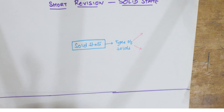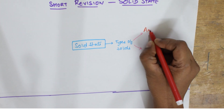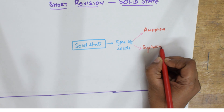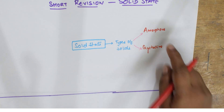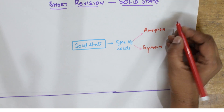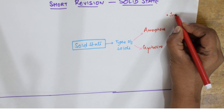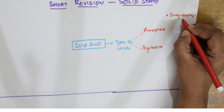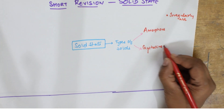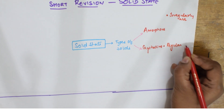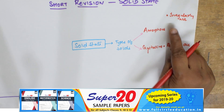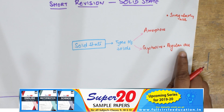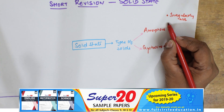The first type is amorphous solids and the second is crystalline solids. In amorphous solids, the atoms or molecules are irregularly arranged. In crystalline solids, all the lattice points are regularly and perfectly aligned one after the other.